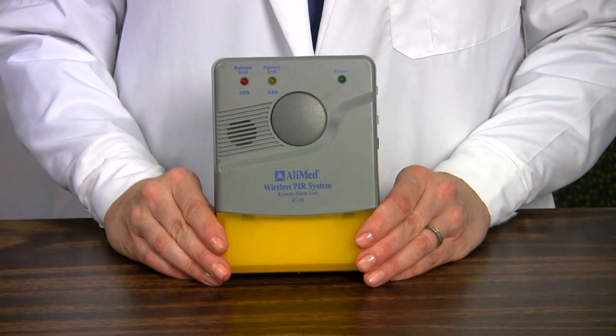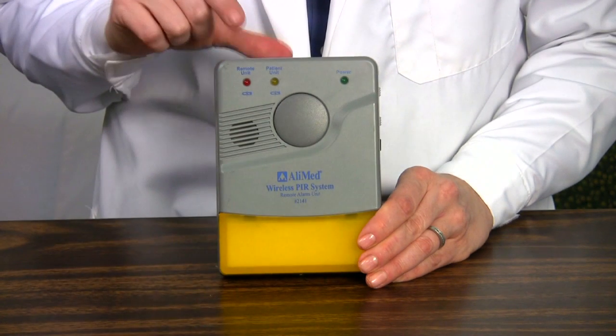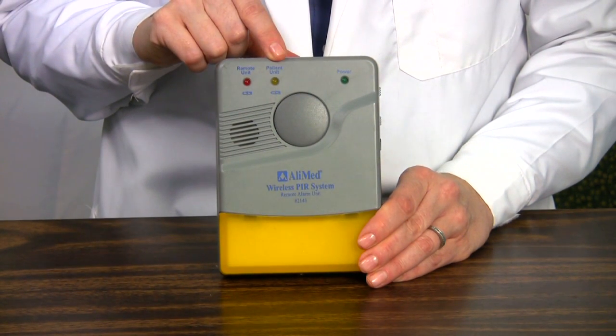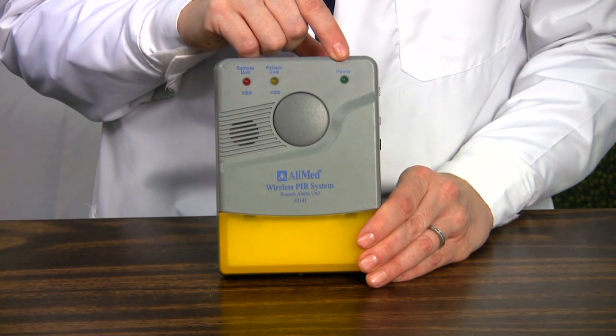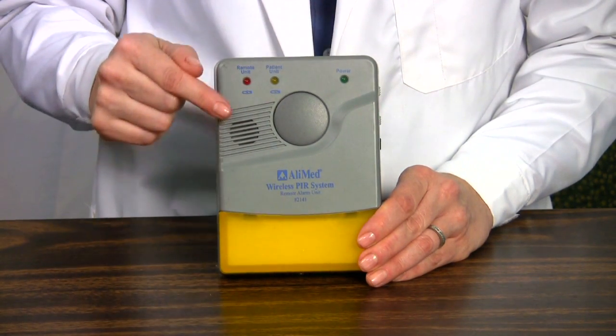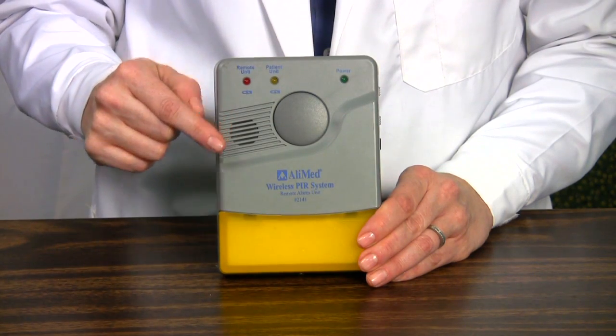On the front is a series of three alert lights. A low battery indicator for the remote unit itself that illuminates red, a patient unit low battery indicator that illuminates yellow when the PIR alarm unit battery is low, and a green power on indicator. The front also contains the alarm speaker and the accompanying flashing alert light.